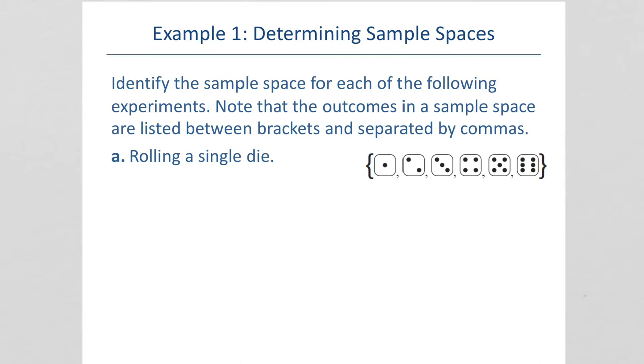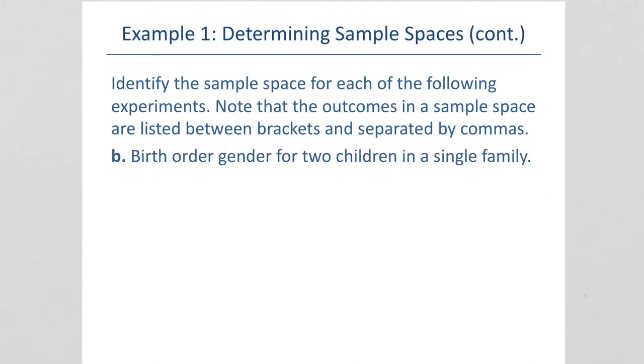So, it looks like our answer is already here, rolling a single die. The sample space would be the set of all possible outcomes for the die. One with the 1 on the side, one with 2, 3, 4, 5, and 6.